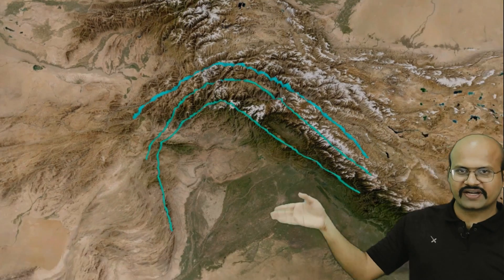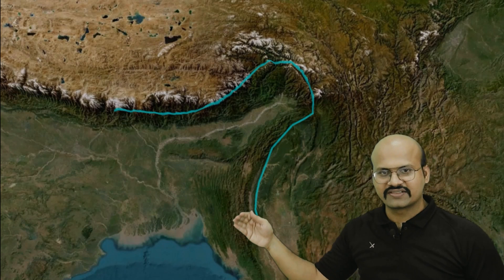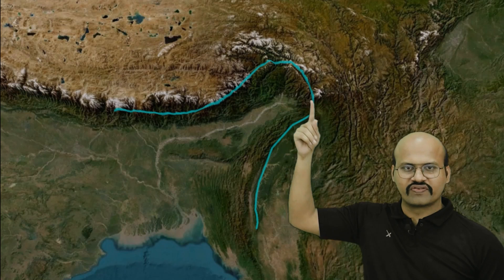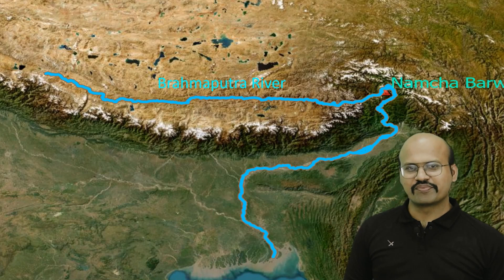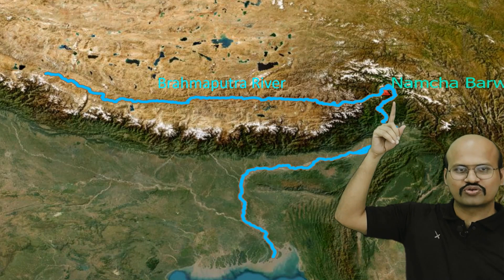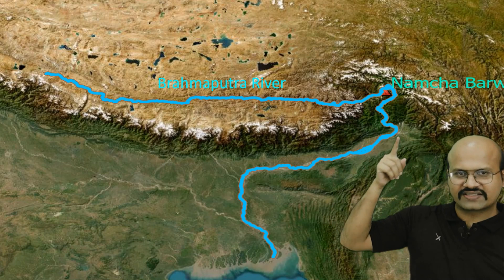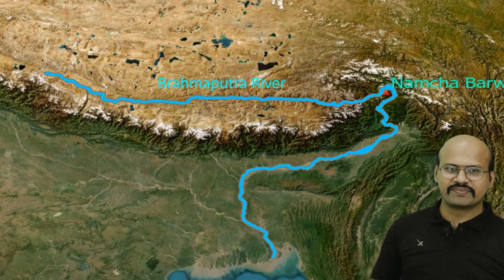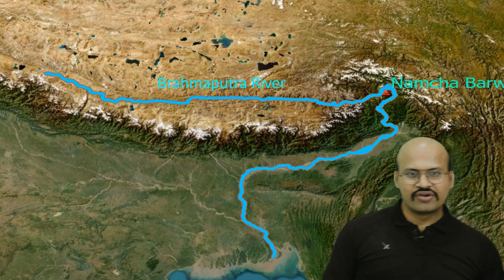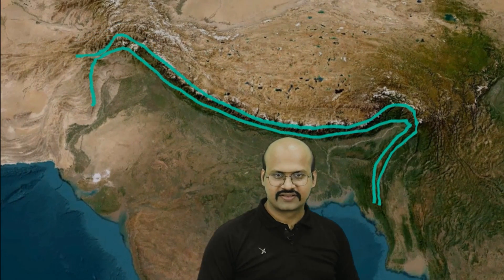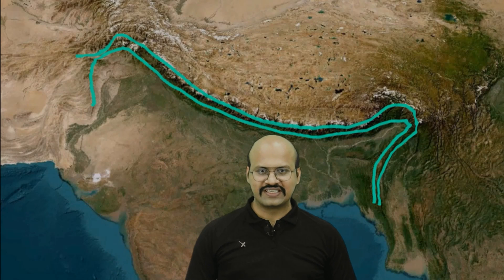We can clearly see that the Himalayas bend in the southern direction on the western margin. On the eastern margin we see a similar thing — the Himalayas are again directed southward and bend over here. When we look at the Brahmaputra river, it comes close to Namcha Barwa mountain, takes a southward turn, and then flows in the southern direction. So here also there is a very clear southward folding in the Himalayas.